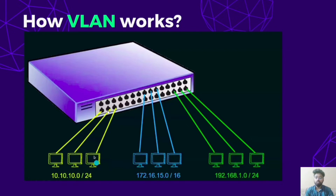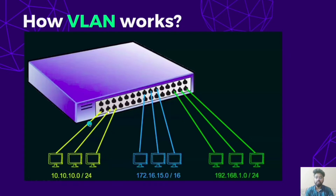If a device in the yellow VLAN wants to share some packets, only the other devices in that same VLAN can receive them, since these three ports belong to one LAN. Similarly, devices in the blue VLAN can communicate among themselves, and devices in the green VLAN can communicate among themselves. If one device sends a broadcast message, only the devices in that same VLAN will receive it — the yellow VLAN broadcast will not disturb the blue or green VLAN.